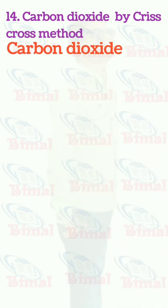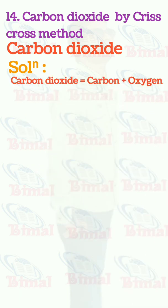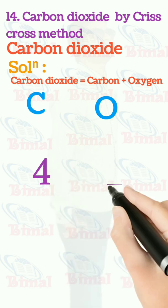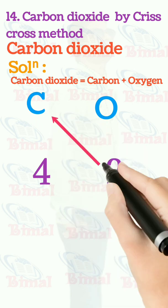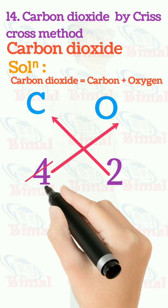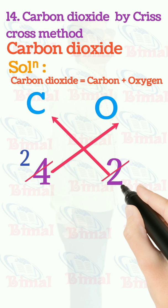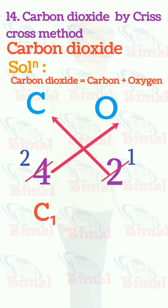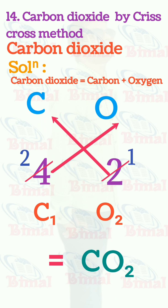Molecular formula of carbon dioxide by criss-cross method. Carbon dioxide is equal to carbon plus oxygen. Symbol for carbon is C, symbol for oxygen is O. Valency for carbon is 4, valency for oxygen is 2. After criss-cross, we divide 4 by 2 to get 2, and 2 by 2 to get 1, exchanging to give C1 and O2, which is equal to CO2. We don't write C1, just C, so CO2 is the molecular formula for carbon dioxide.